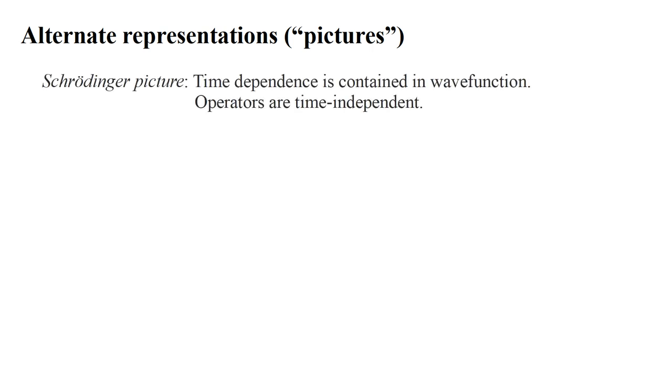Finally, we want to introduce an alternate representation of a quantum system that will simplify our future calculations. The representation we have used so far is called the Schrödinger picture. Here the time dependence of the system is contained in the wave function. Operators are typically time independent. This is the standard representation we use throughout the quantum mechanics series, and it's the way quantum mechanics is typically taught.